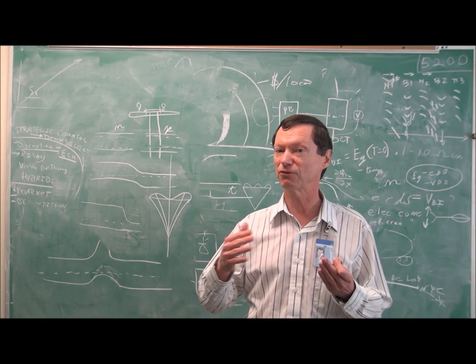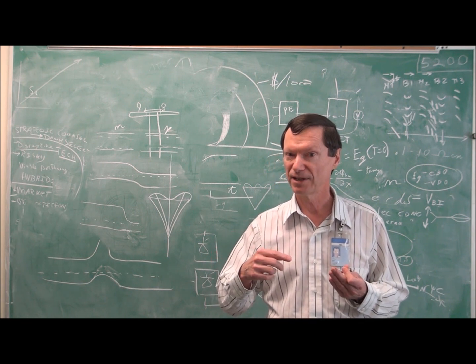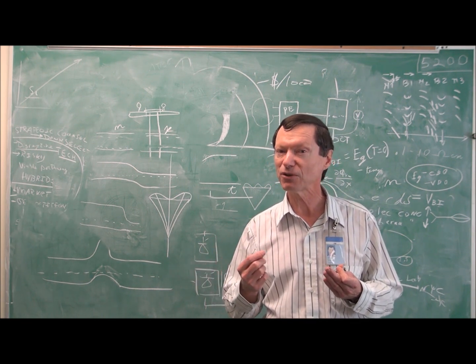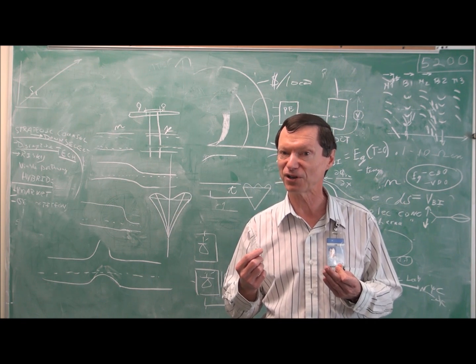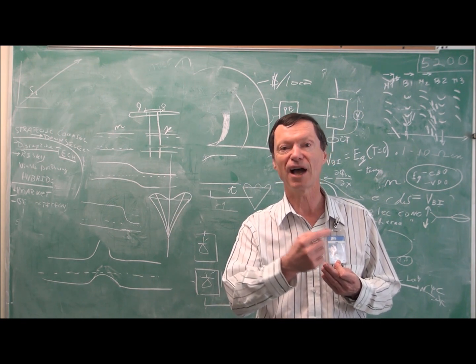So although the current flow in a wire is defined as the flow of positive charges, the real charges are negatively charged electrons, and so they're going in the opposite direction.